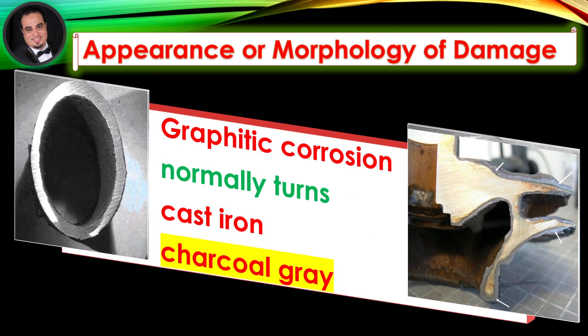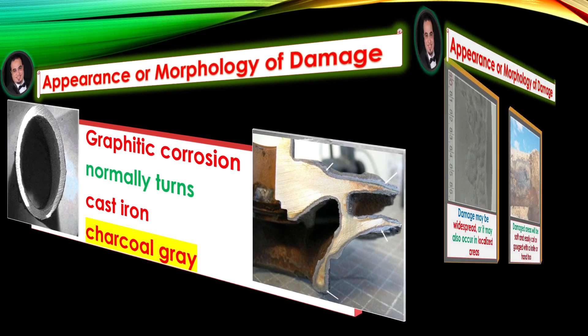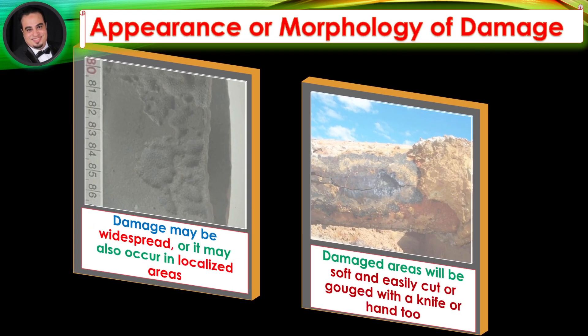Appearance or morphology of damage: Graphitic corrosion normally turns cast iron charcoal gray. The damage may be widespread or it may occur in localized areas in which the majority of the component is unaffected. Damaged areas will be soft and easily cut or gouged with a knife or hand tool.